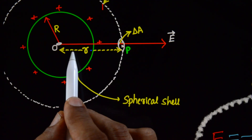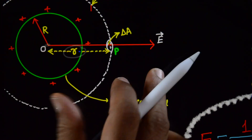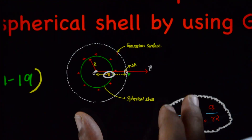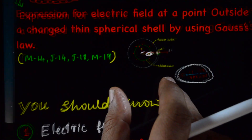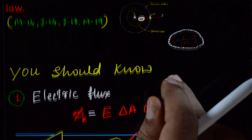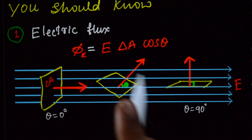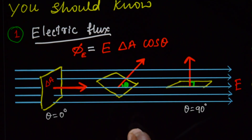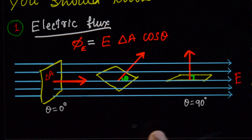R square is the distance between the center of the shell and the point P. Now to derive this, you should know a few things. First, electric flux means something that is flowing out.